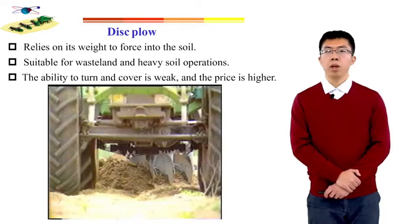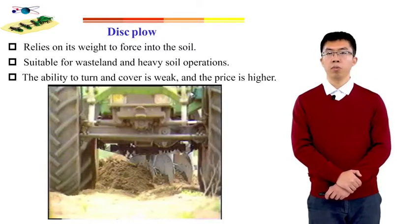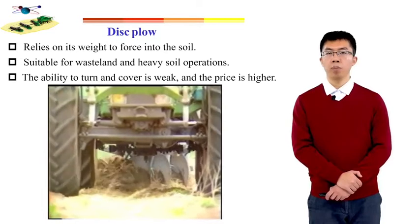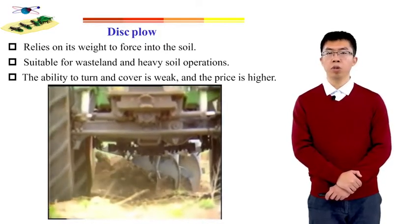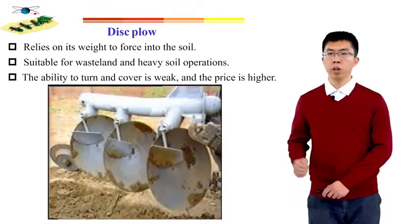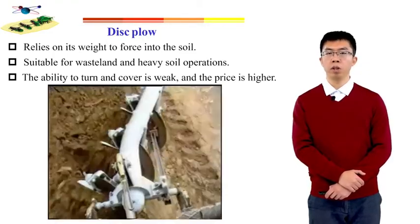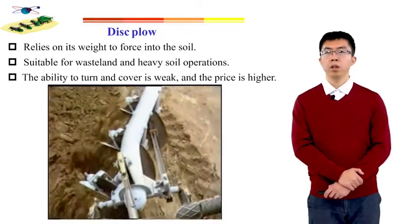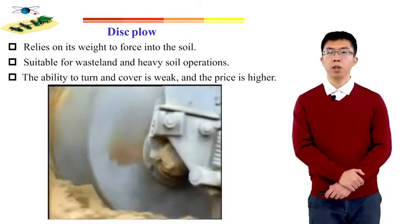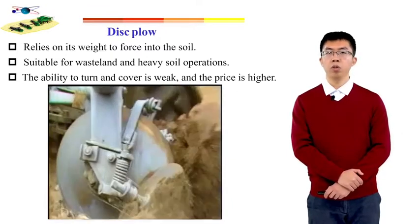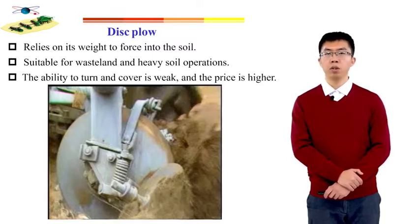The other traditional farming machine is the disk plow. Disk plow is a farming machine with a spherical disk as a working part. It relies on its weight to force into the soil. The soil penetration performance is worse than that of the moldboard plow. The soil friction is small and the ability to cut weeds is strong. It can be used for wasteland and heavy soil operations. But the disadvantages are that the ability to turn and cover is weak, and the price is higher.